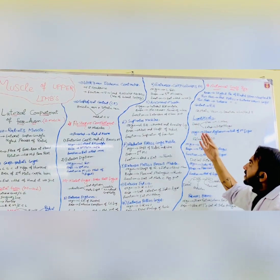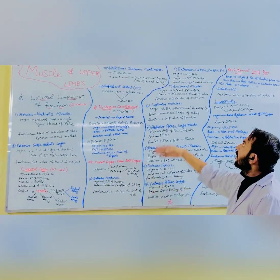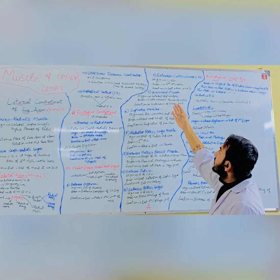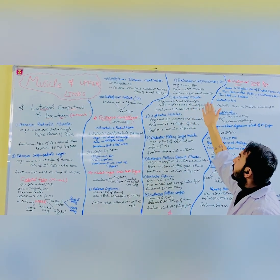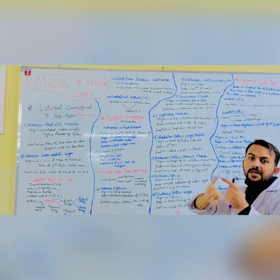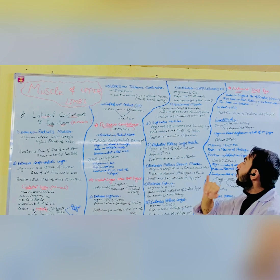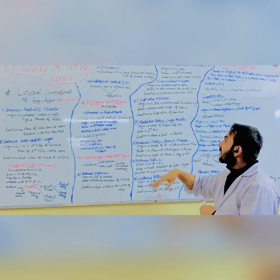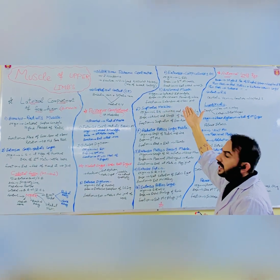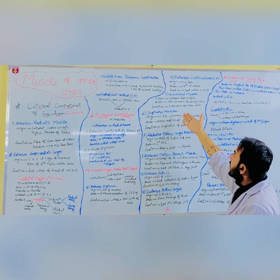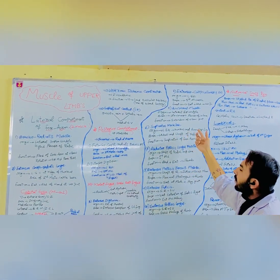The fourth muscle is the extensor carpi ulnaris. Its origin is the lateral epicondyle and its insertion is the base of the fifth metacarpal, which is the little finger side. Its function is extension and adduction of the wrist joint. The fifth muscle is the anconeus. Its origin is the lateral epicondyle and its insertion is the olecranon process of the ulna. Its function is extension of the elbow joint.